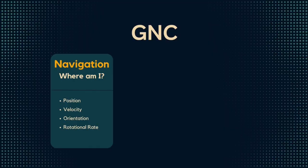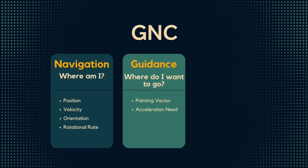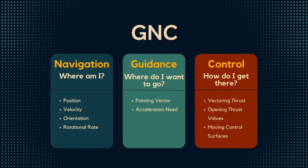The steps for GNC are: first, navigation — where am I? What direction am I pointing in? Then you go on to guidance — where do I want to go? What's my pointing vector? What changes in acceleration do I need? And finally, control will take that pointing vector and decide what commands need to go to the actuators or effectors on the spaceship itself, so that's what will actually move that plume so that you can balance your rocket ship as you move through your ascent.